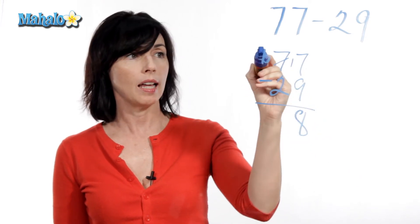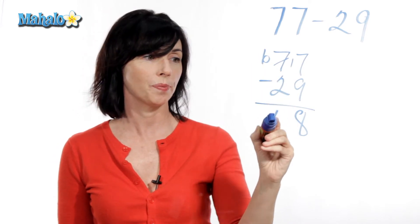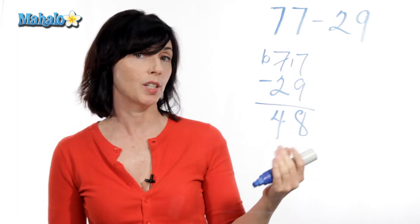Now let's look here. I have, instead of seven, I have six minus two, which is four, and that's 48. So 77 minus 29 is 48.